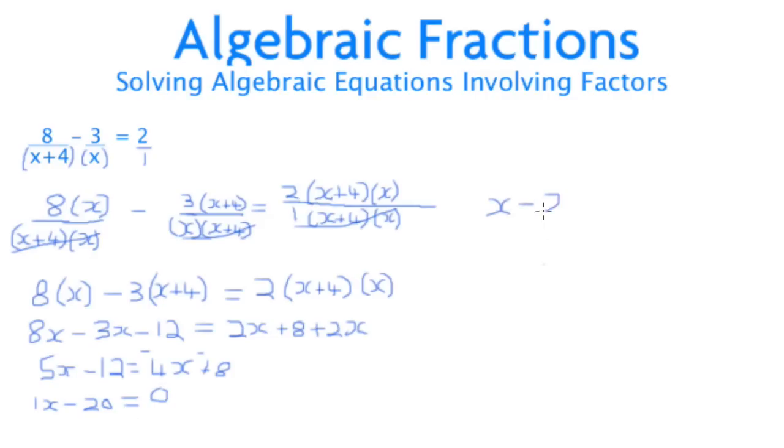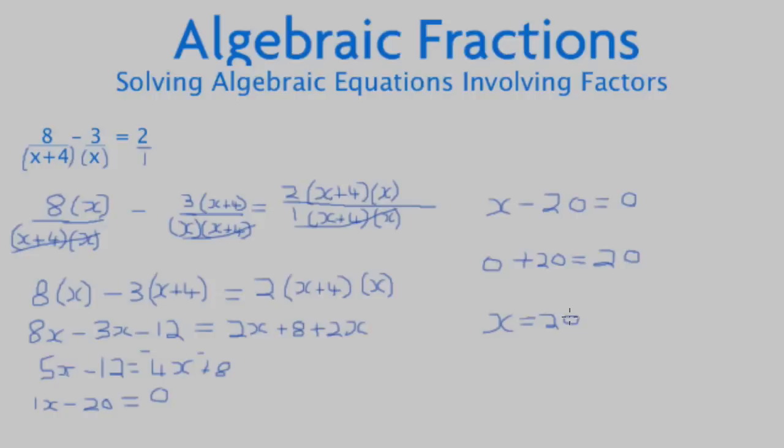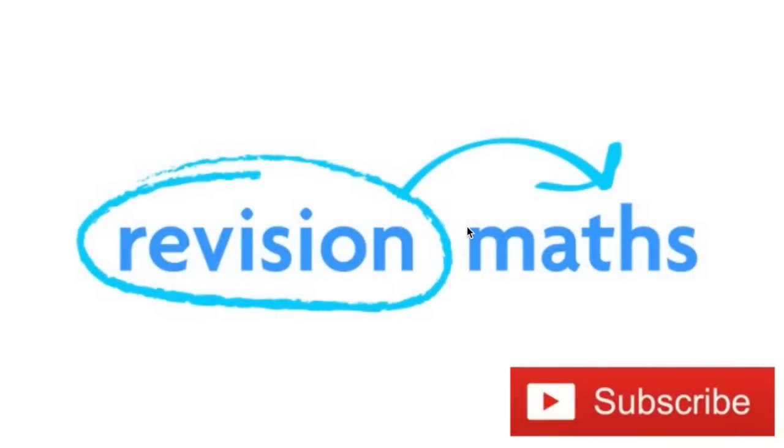If we know that x - 20 is 0, then we can flip the expression around and see that 0 + 20 is 20. Therefore, x must be equal to 20.